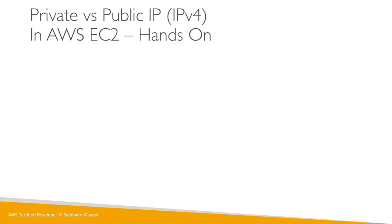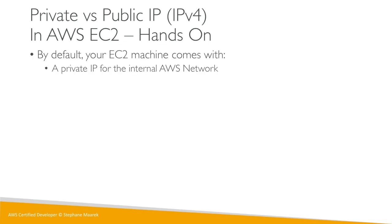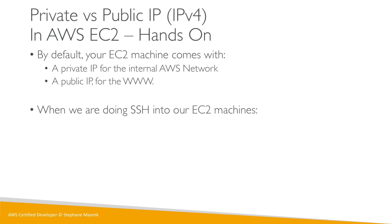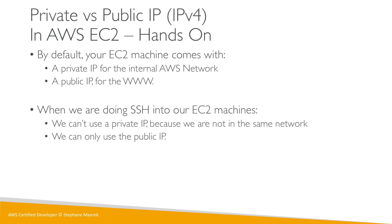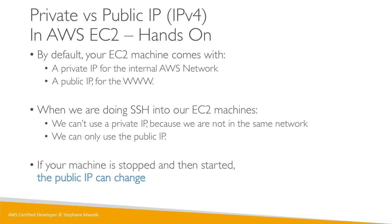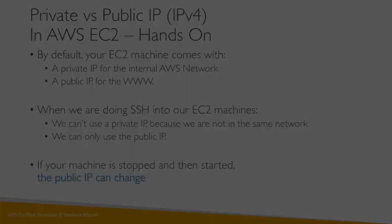By default, our EC2 machine comes with a private IP for the internal AWS network and a public IP for the World Wide Web. When doing SSH into our EC2 machines, we cannot use the private IP because we're not in the same network unless we have a VPN — we can only use the public IP. If the machine is stopped and started, the public IP can change. Let's go and observe all these behaviors in the hands-on.